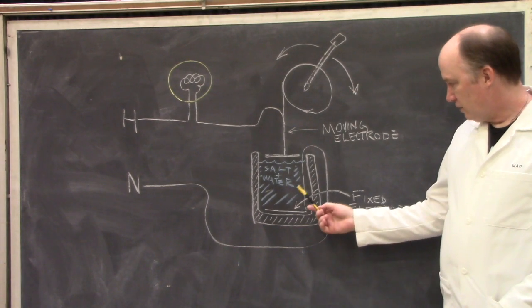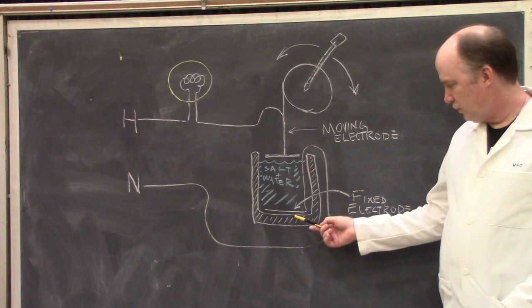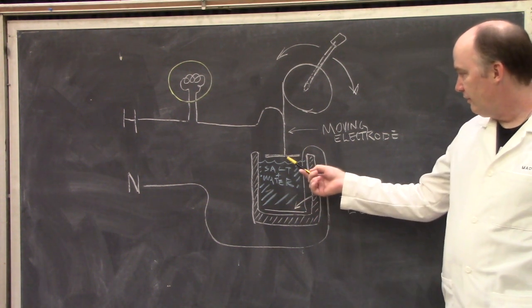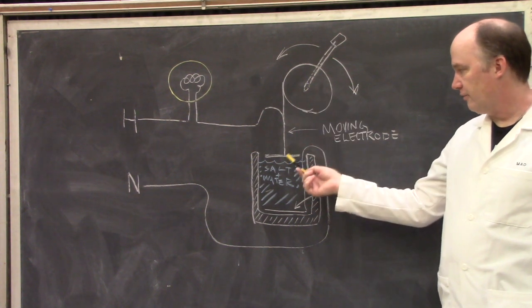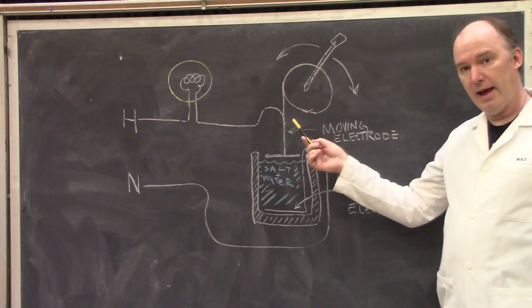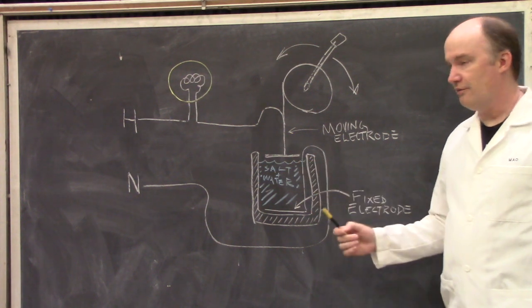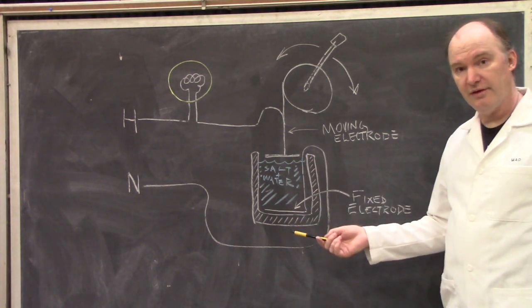In more detail, you have your tank of saltwater and then you have two electrodes. You have a fixed one at the bottom of the tank and then a moving electrode, which is hooked up to your control lever at the top of the tank. And you raise or lower that moving electrode to change the amount of resistive saltwater that the electricity has to pass through.